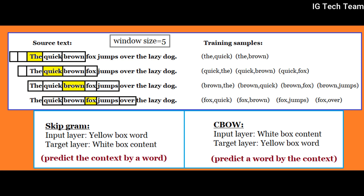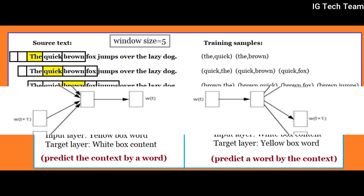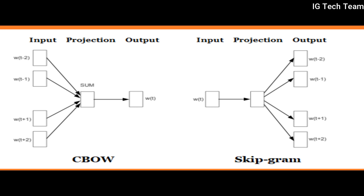Now what is the difference between skip-gram and continuous bag of words? In skip-gram we predict the context by a word, whereas in continuous bag of words we predict a word by the context. You can see by yourself: in skip-gram the input layer will be the yellow box word and the target layer will be the white box context, whereas in continuous bag of words the input layer will be the white box context and the target layer will be the yellow box word. Pause the video and visualize this by yourself — you will get the difference.